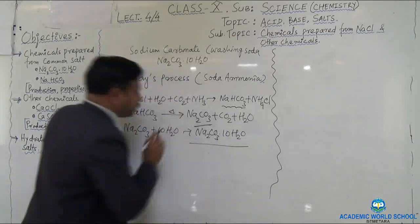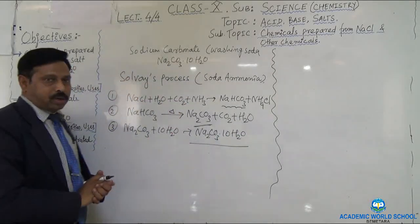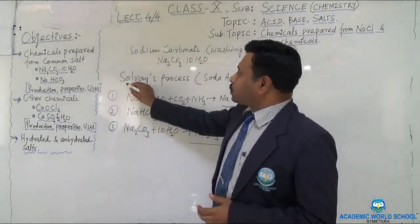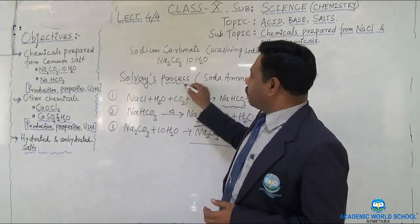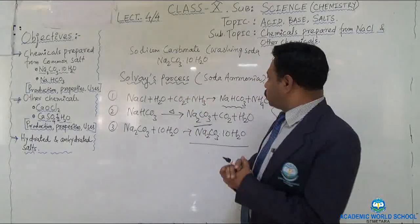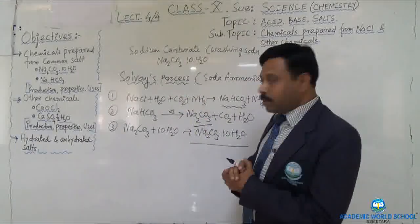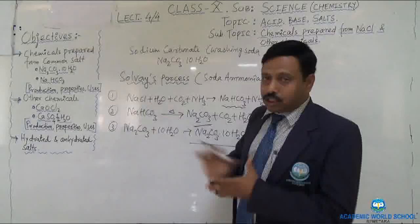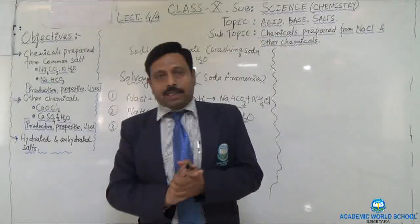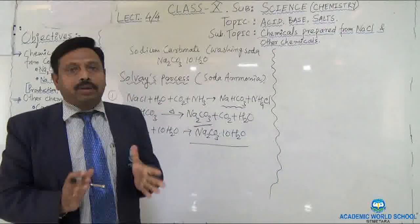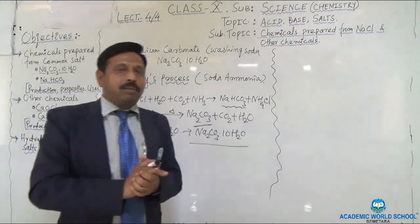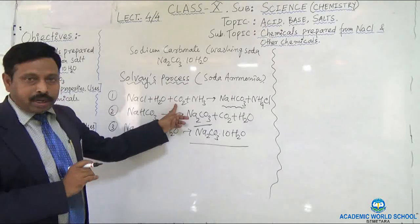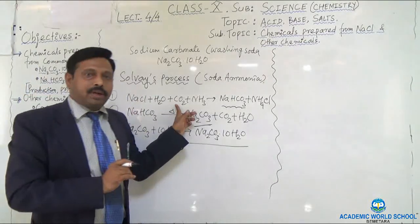Now I will explain the whole process once again. This process is known as the Solvay process — Solvay is the chemist — and the other name is soda ammonia process or method. This consists of three steps. Before the experiment, you need the raw materials: first is carbon dioxide, and ammonia gas is also required.